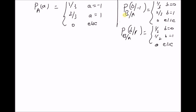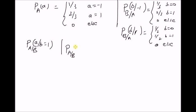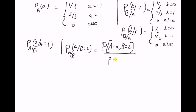Given this information, our goal is to find the conditional probability of A given B, that is A at B equal to 1. By definition, the conditional probability mass function P(A|B) of A given B equals b is the ratio of the joint probability P(A=a, B=b) divided by the probability P(B=b). Our goal is to find the numerator and denominator separately.